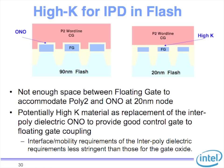The next thing was ONO — oxide nitride oxide. I mentioned a while ago that you needed something close to 120 to 140 angstroms in physical thickness. In a 90 nanometer flash, a 10 nanometer thickness of ONO on either side is not a big deal — you can tolerate it.